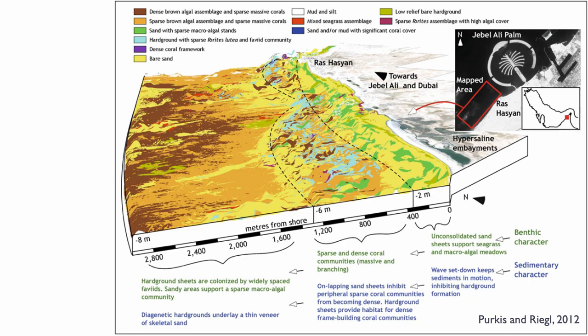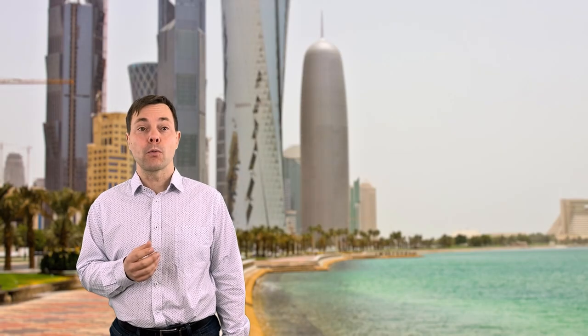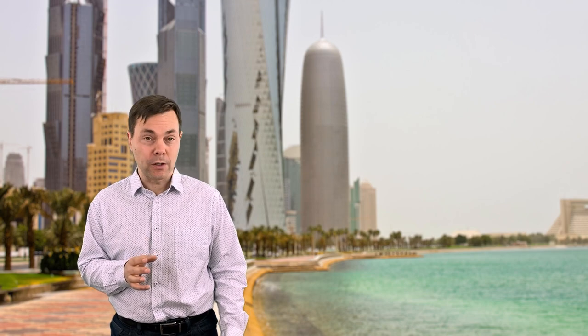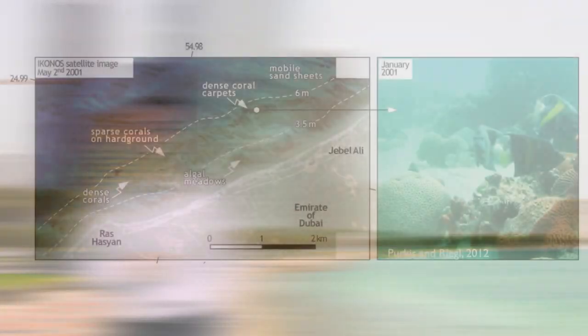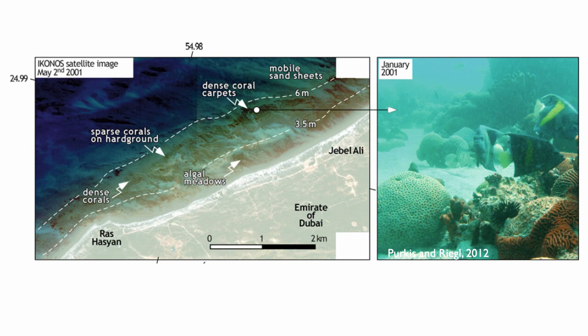As you go deeper, we move into the algal regime, dominated by brown algae. We have sparse brown algae at first on top of the hard ground and then dense brown algae. Within this brown algae you can still have some coral framework forming, making this quite a complex distribution.